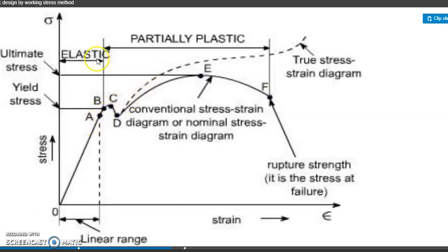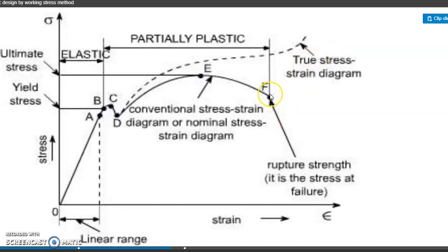The region from B to E represents the partially elastic diagram shown here. The dotted line shows the true stress-strain diagram up to the rupture point. F is the rupture point.